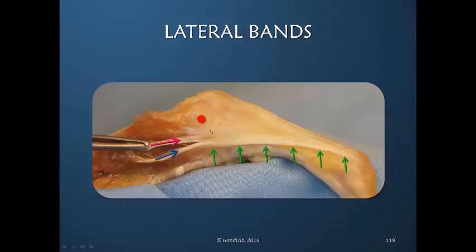Here is another cadaver specimen. This is the metacarpal phalangeal joint and this is the PIP joint. We see clearly the lateral band as it's moving across the PIP joint, again with the lumbrical insertion. And here we actually see that there are multiple insertions of the interosseous muscles — not at all uncommon.